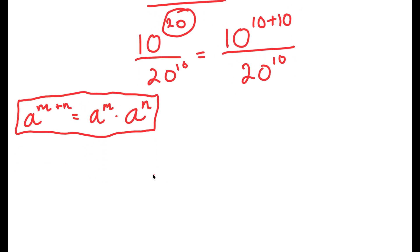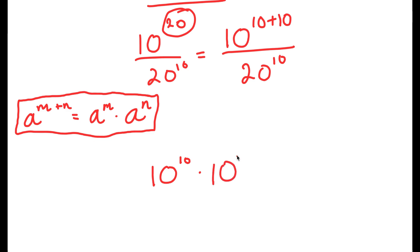10 to the power of 10 plus 10 turns into — we can think of both 10s as m and n — so this becomes 10 to the power of 10 times 10 to the power of 10, all over 20 to the power of 10.